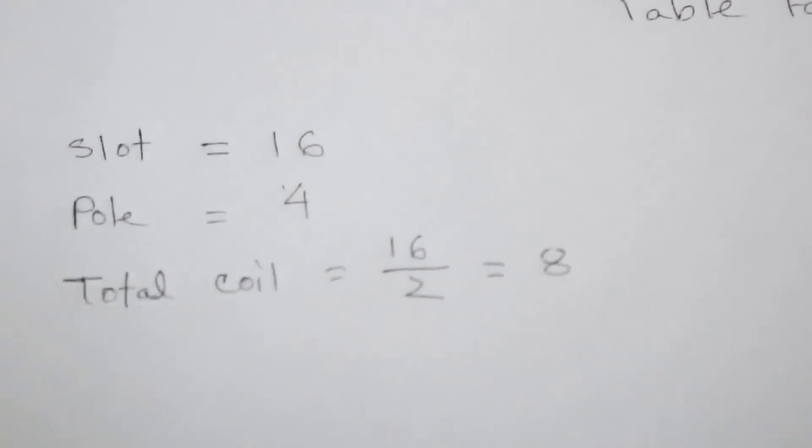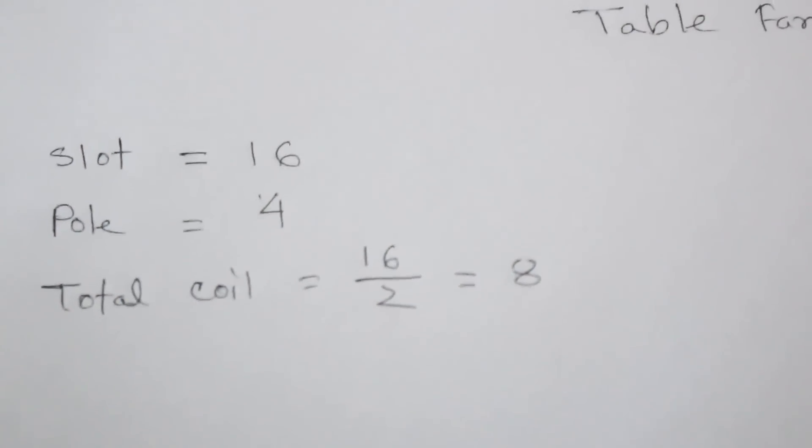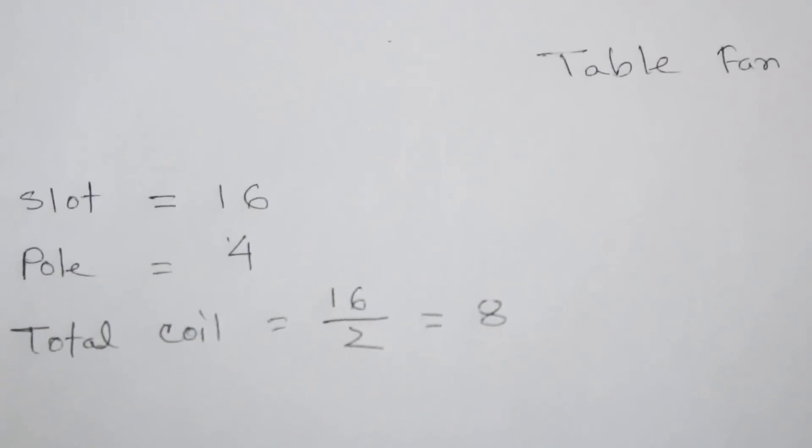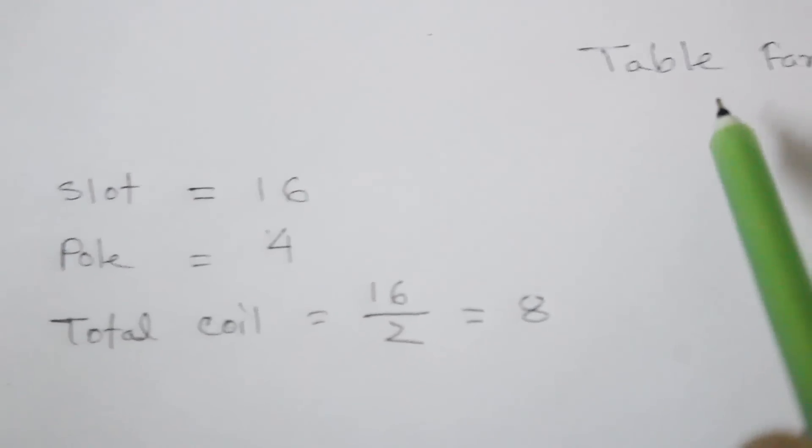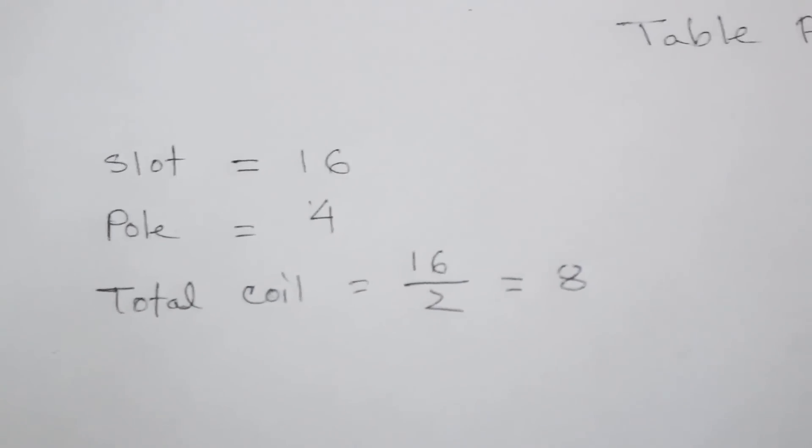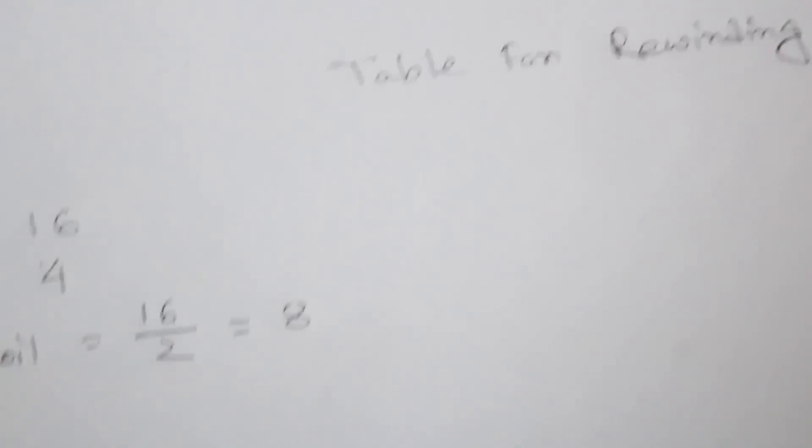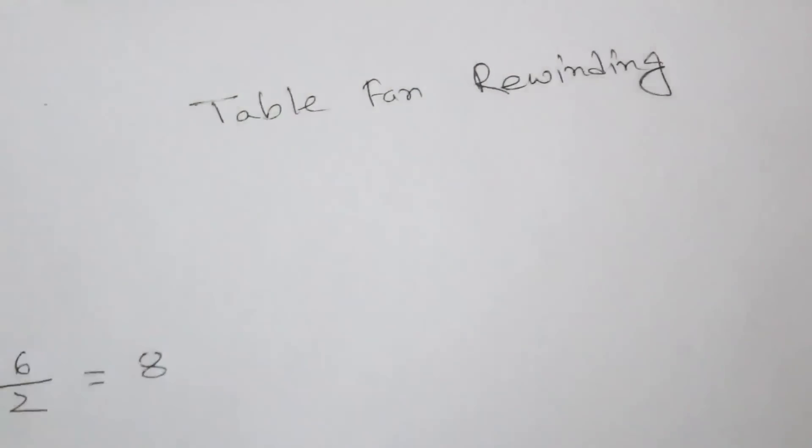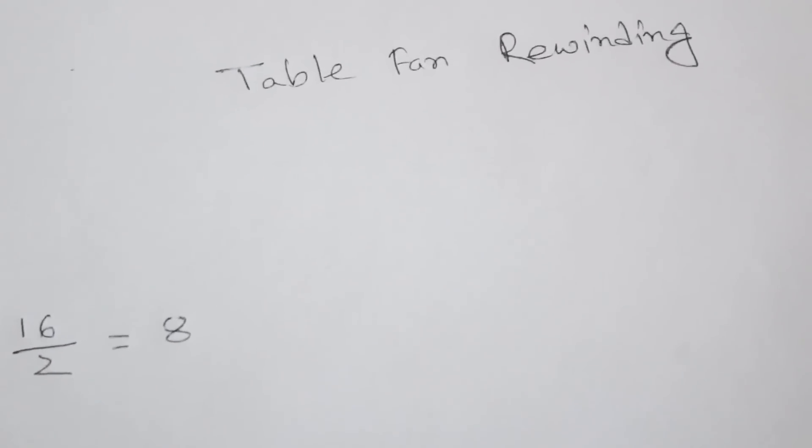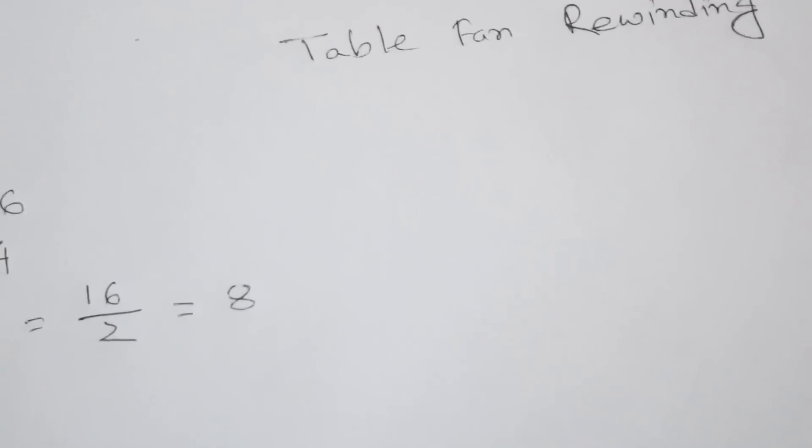This 8 coil is divided by 2 side, because this table fan is a single phase motor. Single phase motor has 2 coils - one is running coil and other is starting coil.